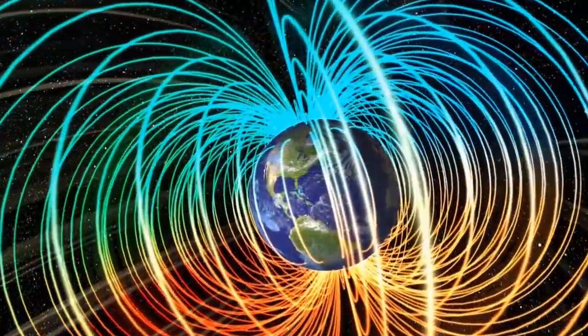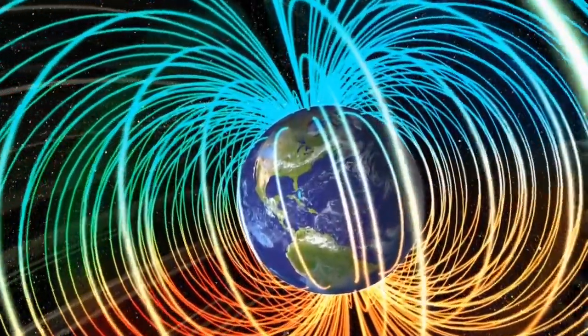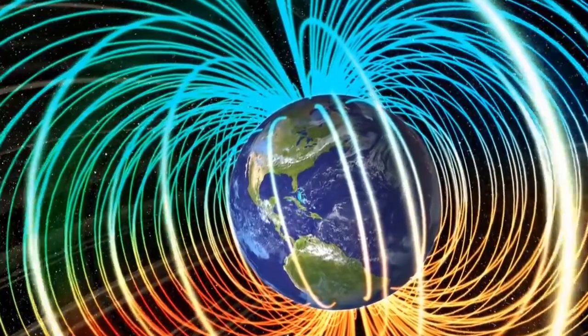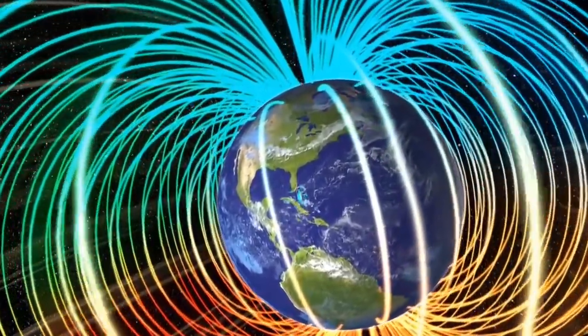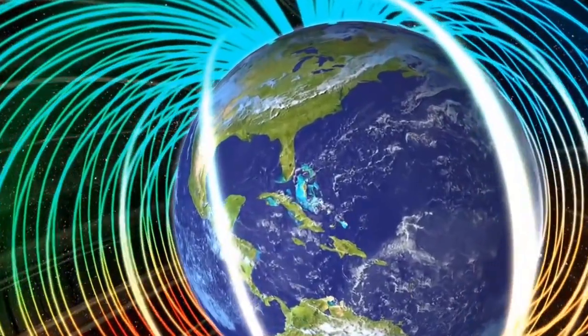Creating this global magnetic shield required special conditions. Earth had to be large enough to have a molten core and had to rotate fast enough to produce an electrical current that generates the planet's magnetosphere.